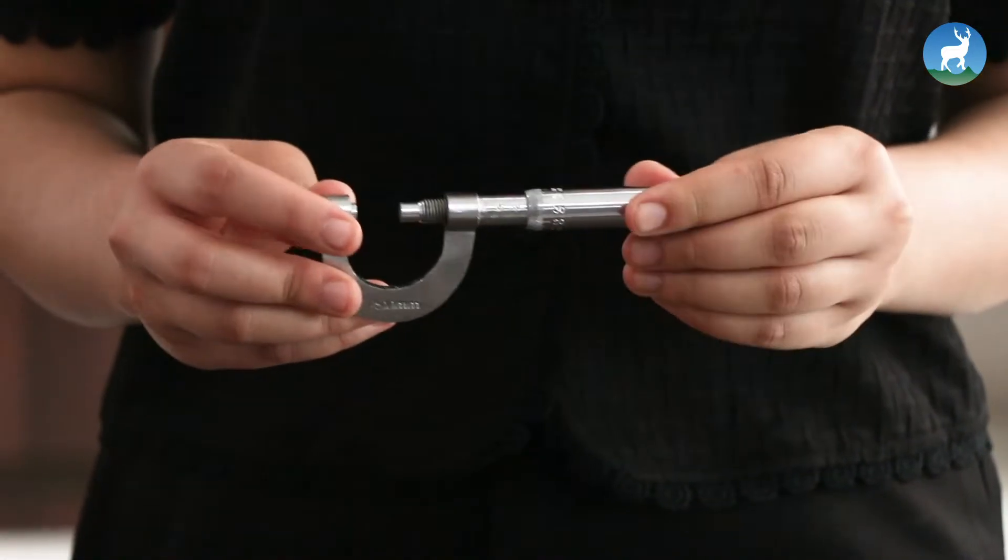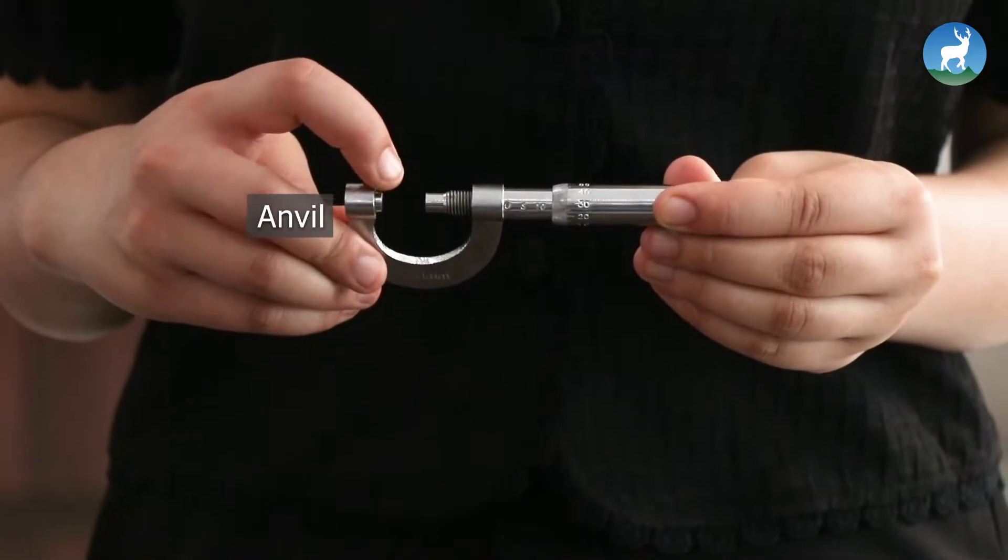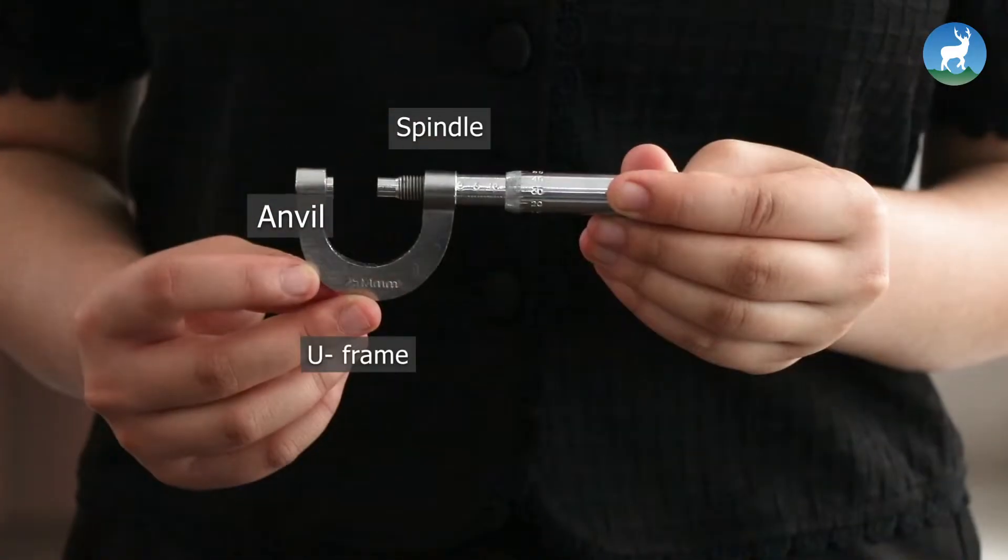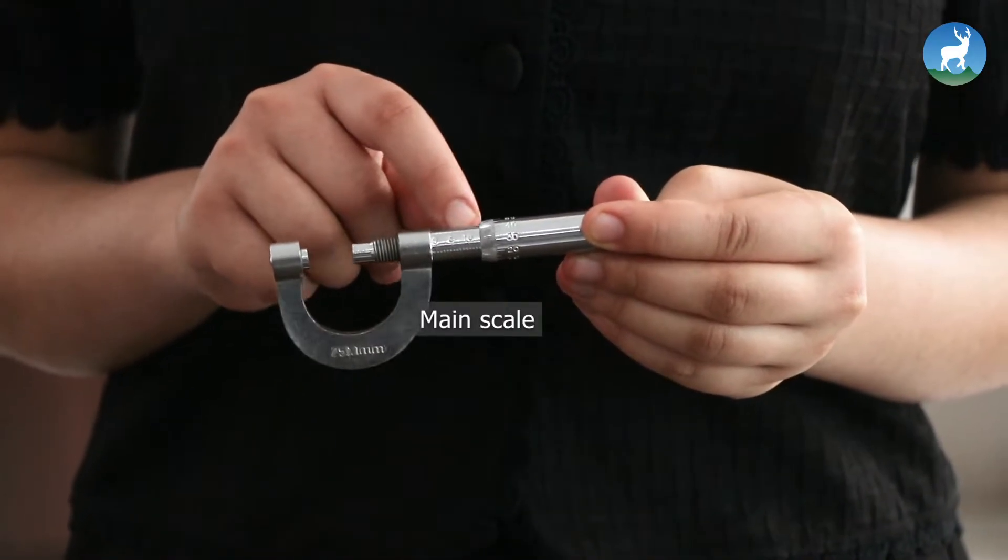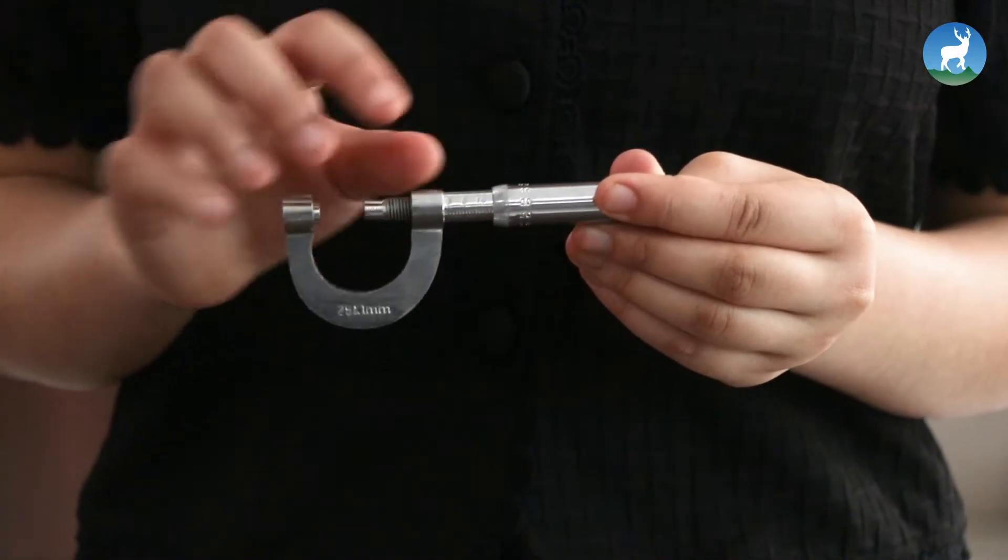Parts of screw gauge include anvil, spindle, u-frame, main scale, circular scale, cymbal, and a ratchet.